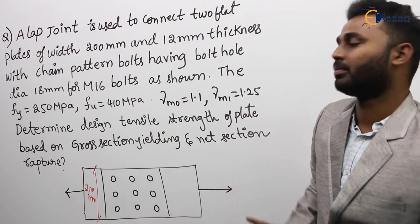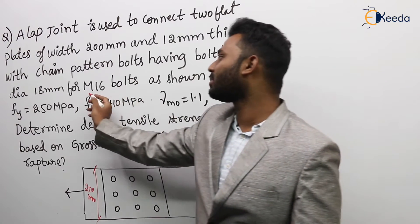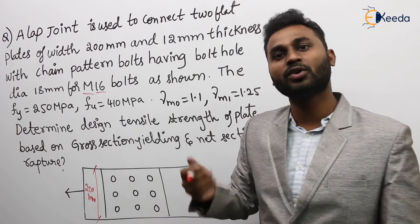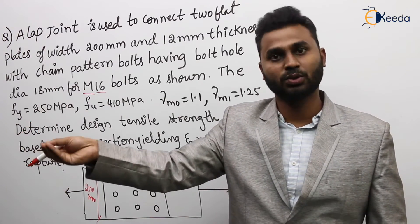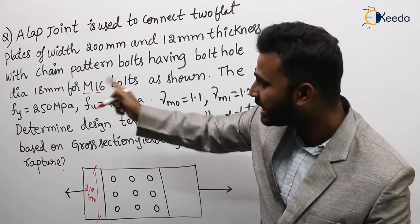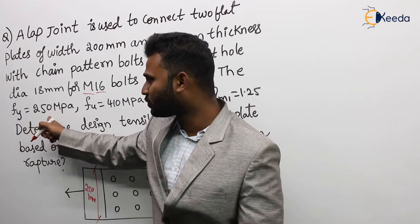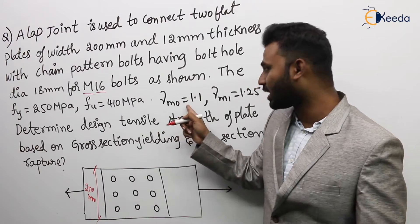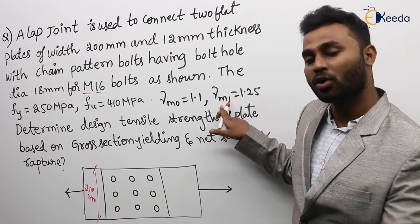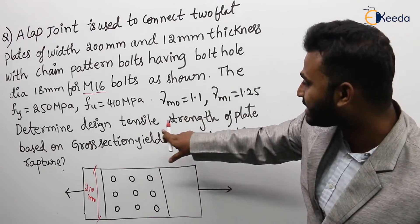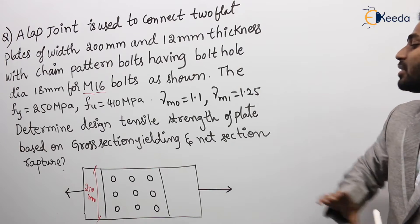The bolt hole diameter is 18 mm. For M16 bolts — metric size 16 mm — the bolt hole is 16 mm plus 2 mm extra clearance, giving 18 mm. The yield stress fy is 250 MPa, ultimate tensile strength fu is 410 MPa. Gamma M0 is used when material is yielding or buckling, and gamma M1 is used when material is collapsing or rupturing. We need to determine the tensile strength of the plate based on cross-section yielding and net section rupture.